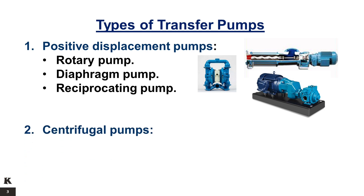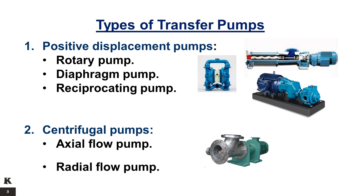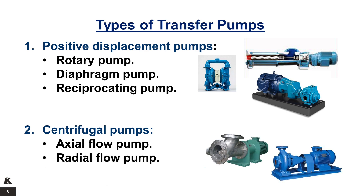2. Centrifugal pumps. The centrifugal pump contains a central rotating wheel, the impeller, that uses centrifugal force to impart high velocity to the liquid and then converts most of this velocity to pressure. Centrifugal pumps operate at relatively high rotation speeds. It includes axial flow pump and radial flow pump. The main advantage of a positive displacement pump is that it can handle highly viscous fluids, whereas a centrifugal pump would be inefficient and require high driver powers.